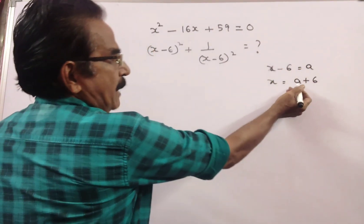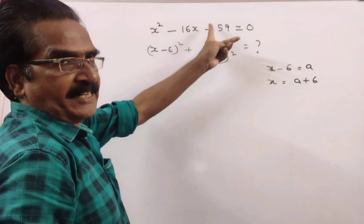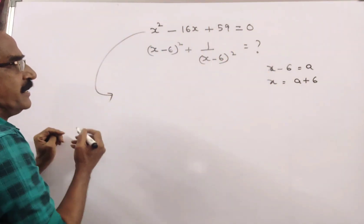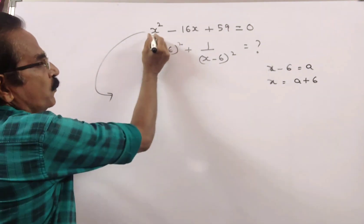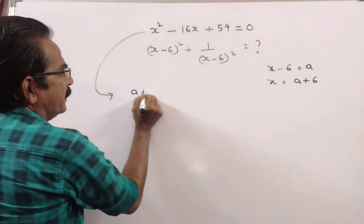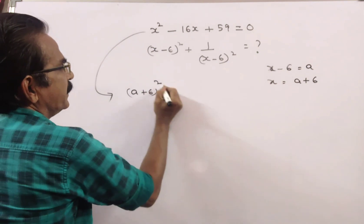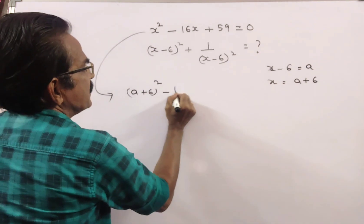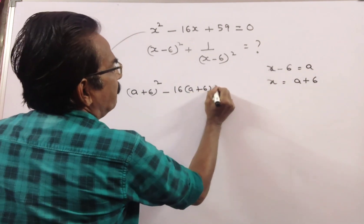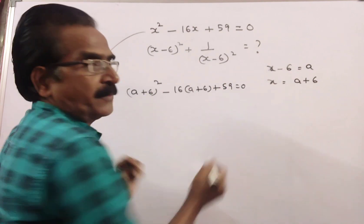Now, I am substituting this x value in this equation. The equation reduces to (a plus 6)² minus 16 into (a plus 6) plus 59 is equal to 0.